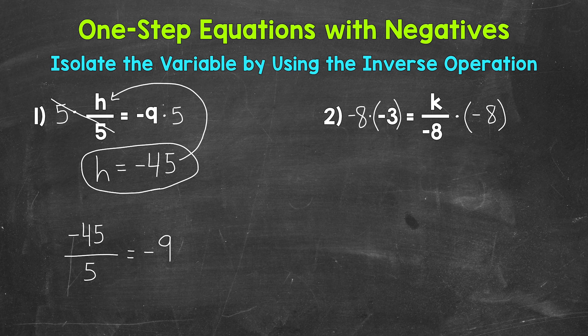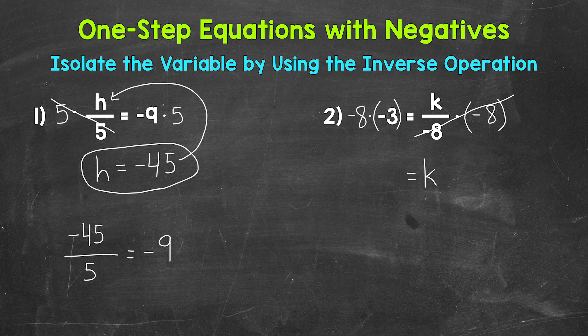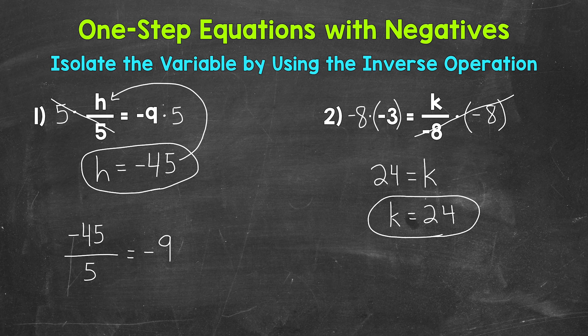On the right side, we are dividing by negative 8 and multiplying by negative 8, so these negative 8s cancel each other out — they equal 1. We have negative 8 divided by negative 8; a negative divided by a negative is a positive, so that gives us positive 1, meaning 1k, which is just k. Our variable is now isolated. On the left side, we have negative 8 times negative 3 — a negative times a negative equals a positive — so this gives us positive 24. k equals 24.